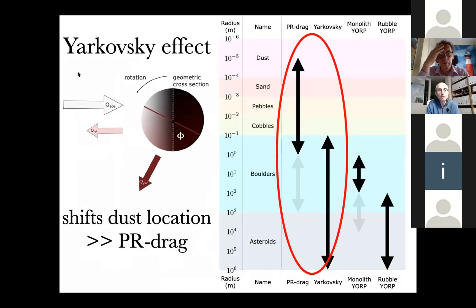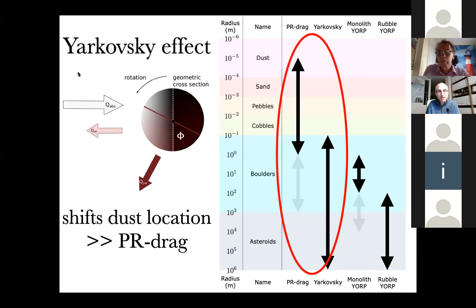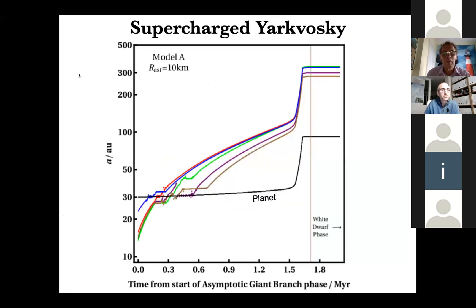The next question is: what happens to these fragments? The answer depends on their size. If they are boulder or asteroid size, the fragments would be subjected to another radiative effect known as the Yarkovsky effect. The Yarkovsky effect describes how objects are propelled by anisotropically re-emitting absorbed radiation, and the resulting drift in orbit is usually over an order of magnitude stronger than the more commonly known Poynting-Robertson drag, which acts on dust. AGB stars with much greater luminosities supercharge the Yarkovsky effect, so much so that it can propel intact boulders or asteroids to distances of hundreds of AU.